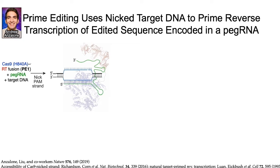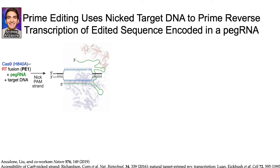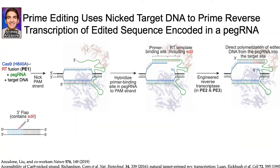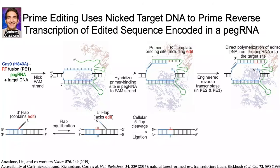Prime editors are fusions of Cas nickases with engineered reverse transcriptases. They use an engineered prime editing guide RNA, or pegRNA for short, which not only specifies the target site for editing but also encodes the desired edit. Prime editors nick the target DNA site, then use the 3'-end of the freshly nicked DNA strand to prime reverse transcription of an extension on the pegRNA that serves as a reverse transcriptase template. The engineered reverse transcriptase domain then copies the desired edit directly onto the target DNA strand, creating a 3'-flap that the cell resolves into a heteroduplex containing one edited and one unedited strand. The PE3 system then nicks the non-edited strand to cause the cell to remake the strand using the edited strand as a template, thereby completing the editing of both DNA strands.